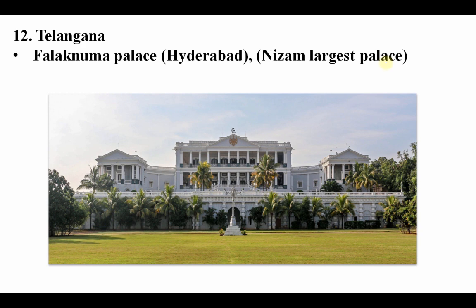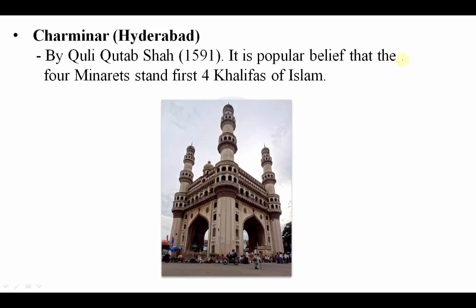Let's go to Telangana. There is Falaknuma Palace in Hyderabad — it is considered the Nizam's largest palace. Charminar is also in Hyderabad, made by Kuli Qutub Shah in 1591. It is popularly believed that the four minarets stand for the four Khalifas of Islam.